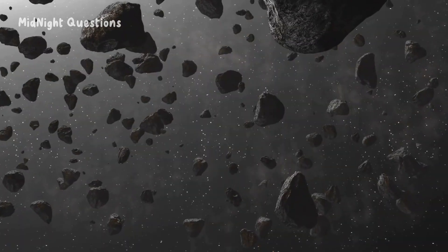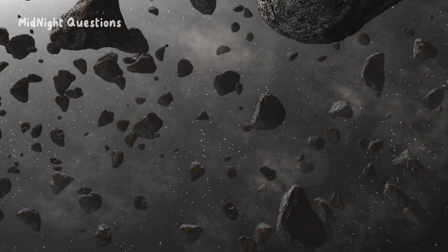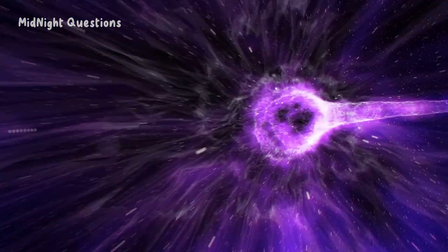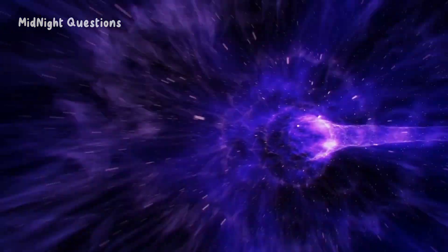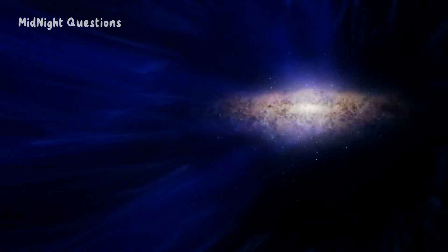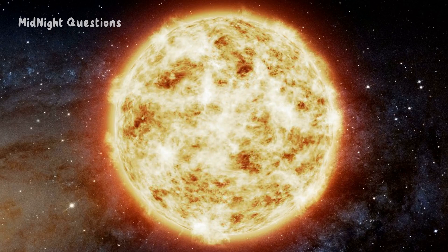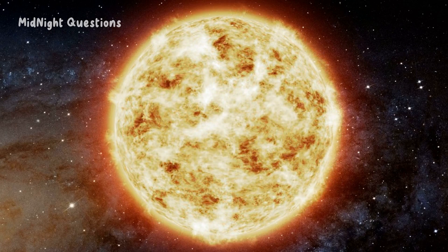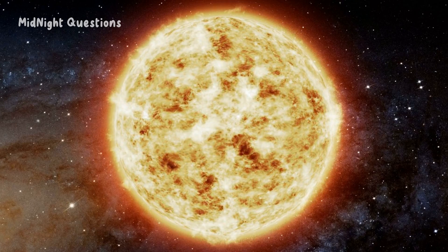We also know that black holes come in different sizes. There are stellar black holes, which are formed from the collapse of individual stars and can range in mass from a few times that of the sun to tens of times that of the sun. There are also supermassive black holes, which are found at the centers of galaxies and can have masses billions of times that of the sun.